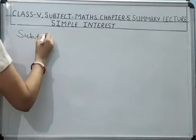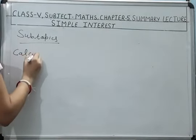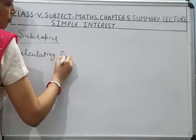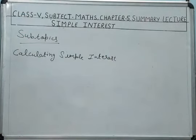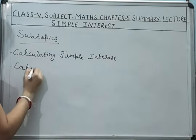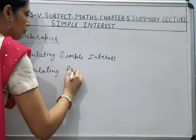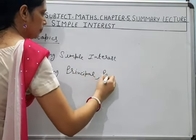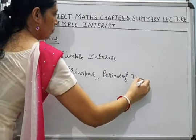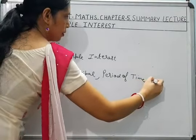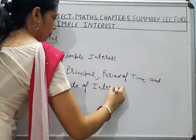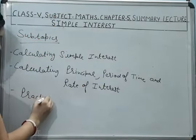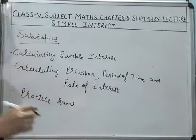Today's subtopics are: Calculating Simple Interest — I will tell you what simple interest is and how to calculate it — then Calculating Principal, Period of Time and Rate of Interest. Along with this, we will do Practice Sums of Chapter 5.